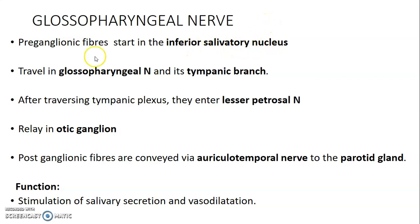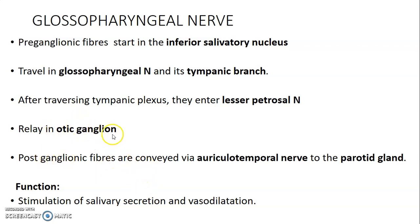The preganglionic fibers will traverse through the tympanic plexus and enter the lesser petrosal nerve. From the lesser petrosal nerve, these preganglionic fibers will relay in the otic ganglion. Through their synapsing with the postganglionic fibers, the postganglionic fibers will then hitchhike onto branches from the mandibular division of the trigeminal nerve to get to the parotid gland.